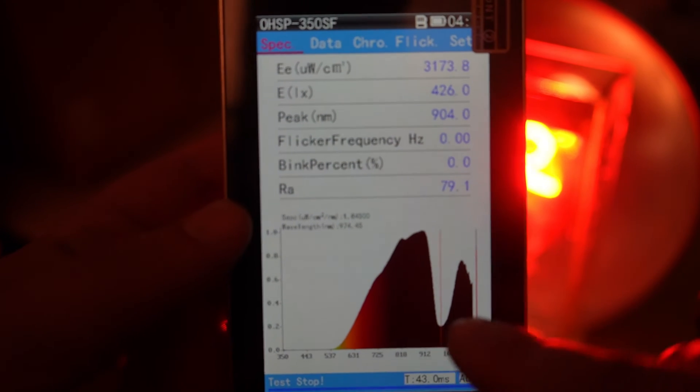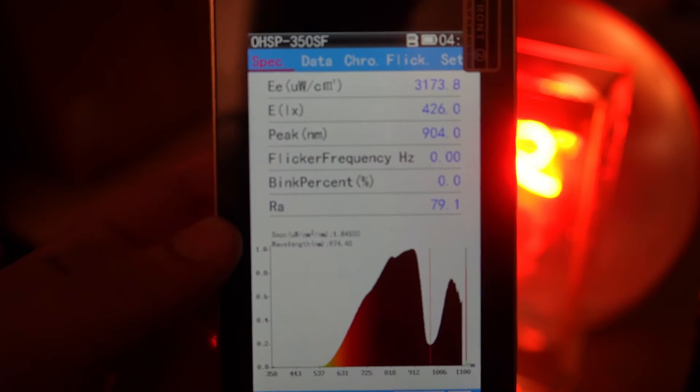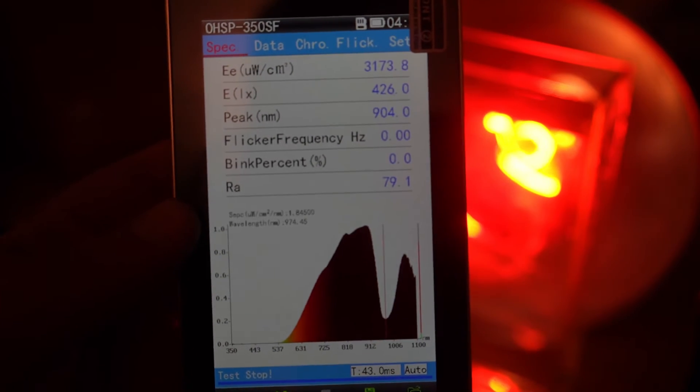But we see a lot of the thousands getting passed through, because the thousands have kind of a low point of water absorption, and that's why you get good penetration from the mid-thousands, 1050s, 1060s, 1070s.